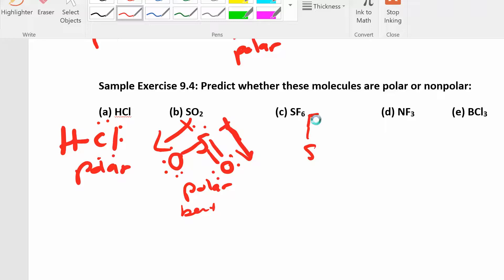SF6 is octahedral. You can draw on all the dots if you want to. We've already seen this one a million times. So this is nonpolar because it's completely symmetric and all of the vectors are going to cancel each other out. So this is nonpolar.